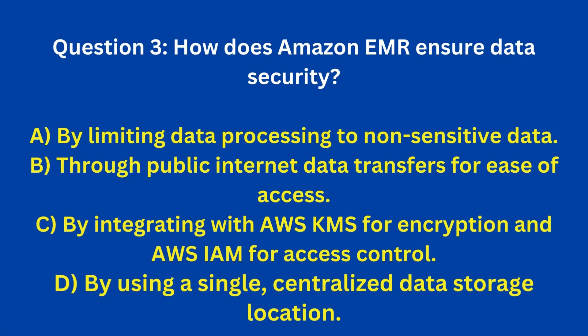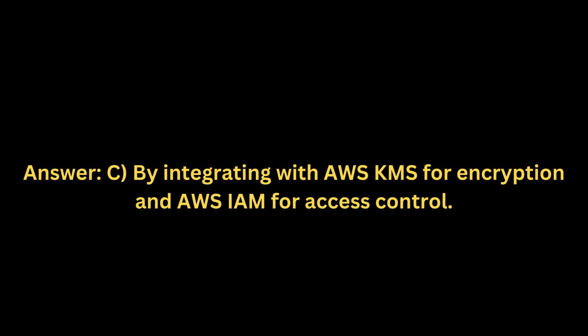Question 3: How does Amazon EMR ensure data security? A. By limiting data processing to non-sensitive data. B. Through public internet data transfers for ease of access. C. By integrating with AWS KMS for encryption and AWS IAM for access control. D. By using a single, centralized data storage location. Answer: C. By integrating with AWS KMS for encryption and AWS IAM for access control.